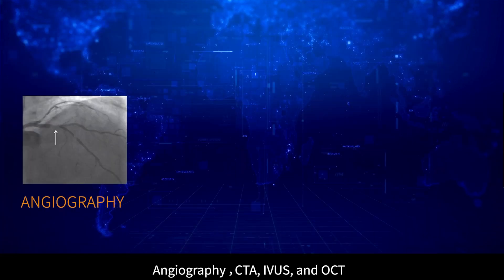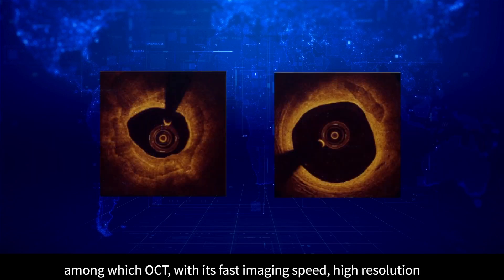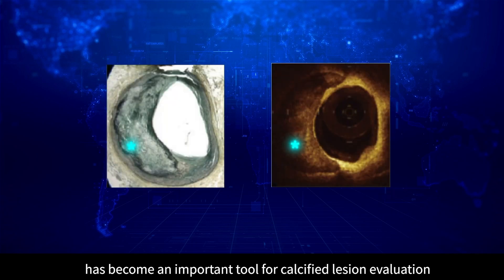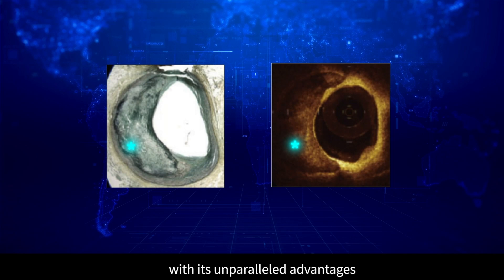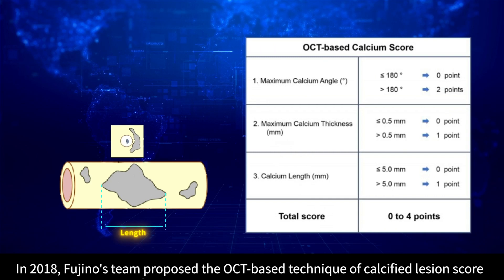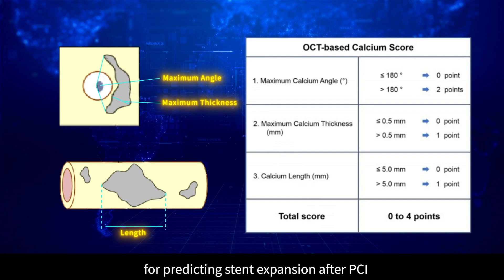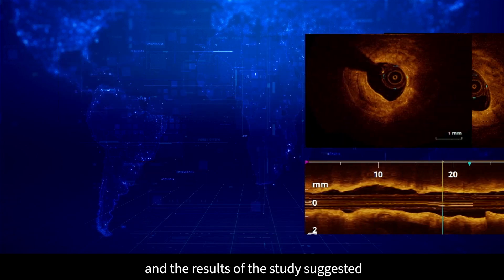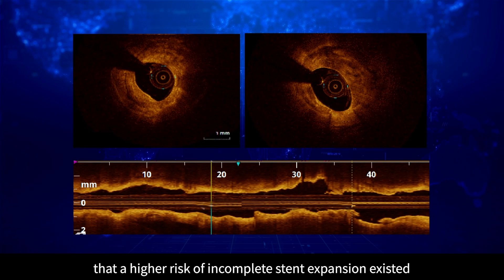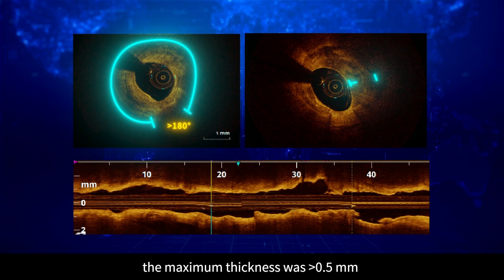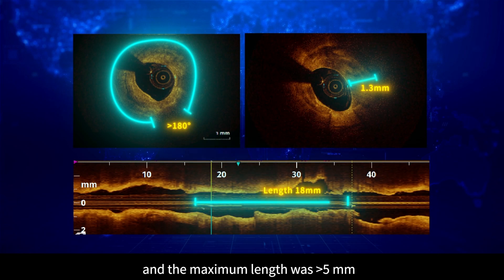Common clinical methods of identification and evaluation include angiography, CTA, IVUS, and OCT — among which OCT, with its fast imaging speed, high resolution, and ability to assess the thickness of calcified lesions, has become an important tool for calcified lesion evaluation. In 2018, Fujino's team proposed the OCT-based calcification score technique for predicting stent expansion after PCI. The results suggested that a higher risk of incomplete stent expansion existed when the maximum calcification angle was greater than 180 degrees, the maximum thickness was greater than 0.5 mm, and the maximum length was greater than 5 mm.